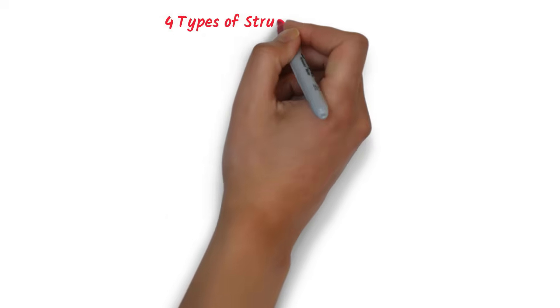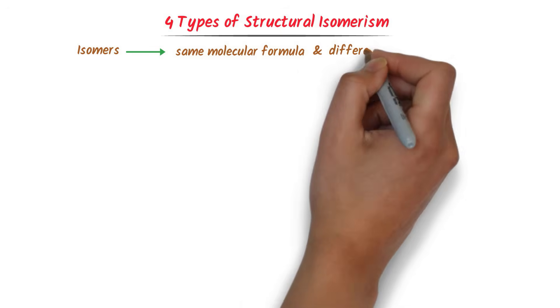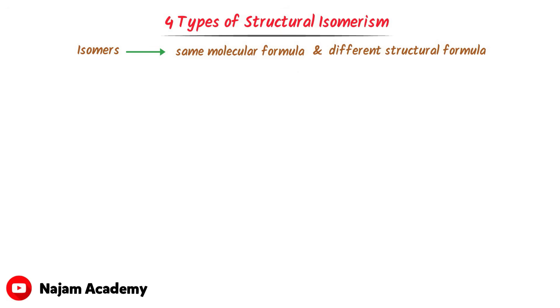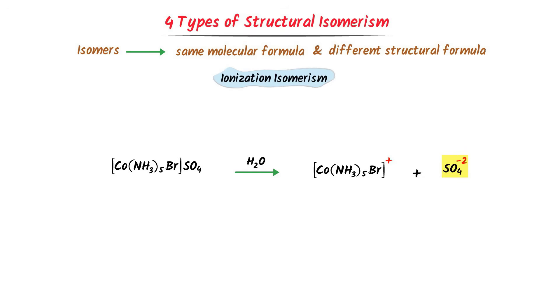We will now learn the four types of structural isomerism. Isomers have the same molecular formula but different structural formula. The first type is ionization isomerism. Consider a coordination compound — if we dissolve this coordination compound in water, it will dissociate into a positive ion plus sulfate ion.